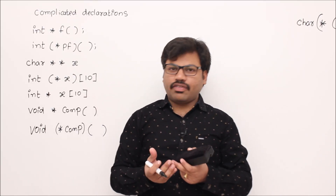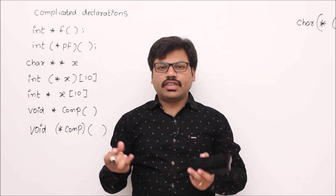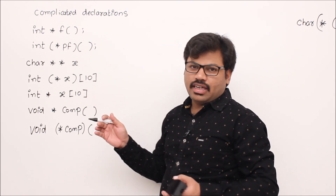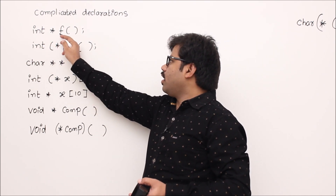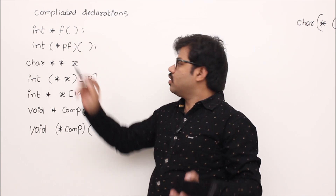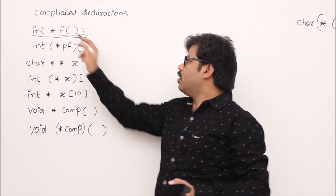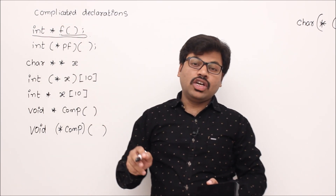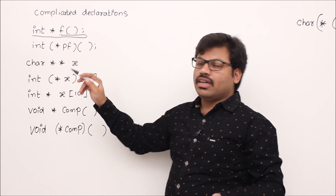I'd like to discuss complicated declarations — some declarations are very lengthy and hard to understand. I'll give you an easy shortcut using which any declaration can be easily understood. Whenever you see a declaration, start at the variable, go rightmost, then come back to the leftmost. That is the idea: start at the variable, go rightmost, then come back leftmost.